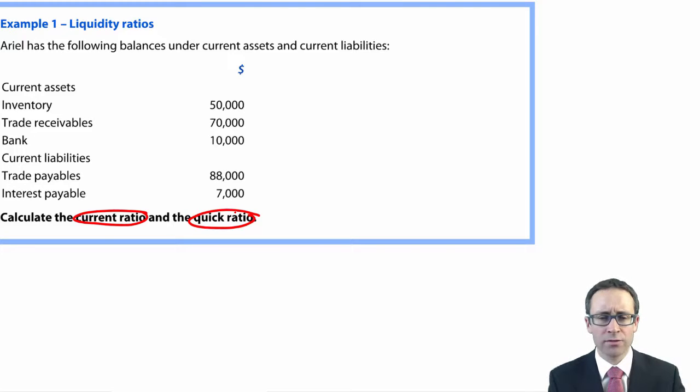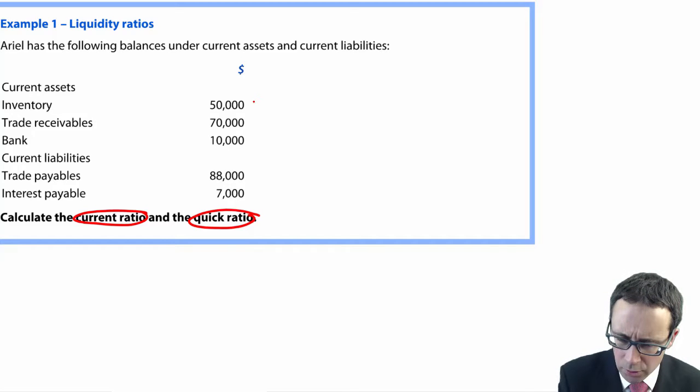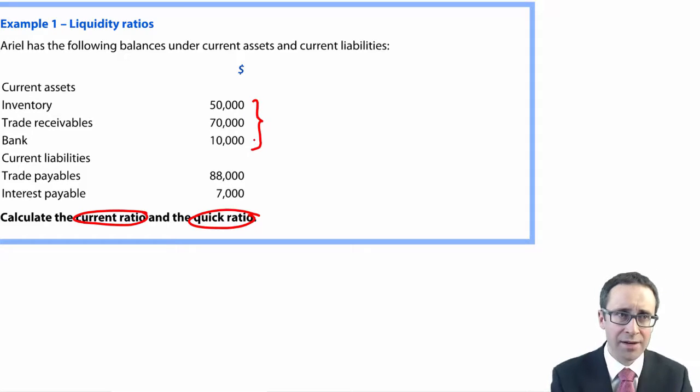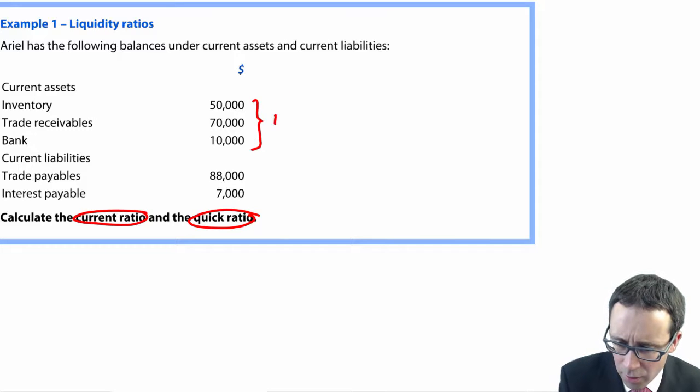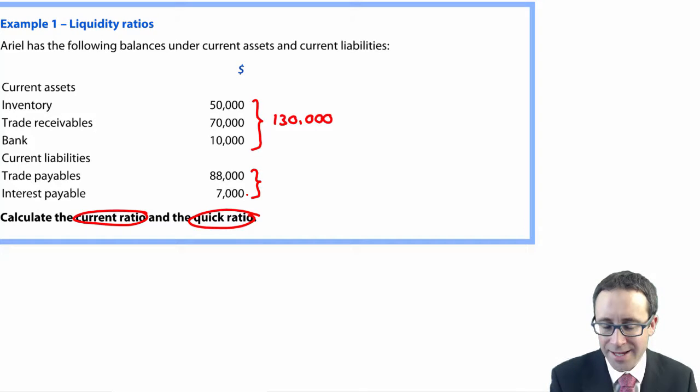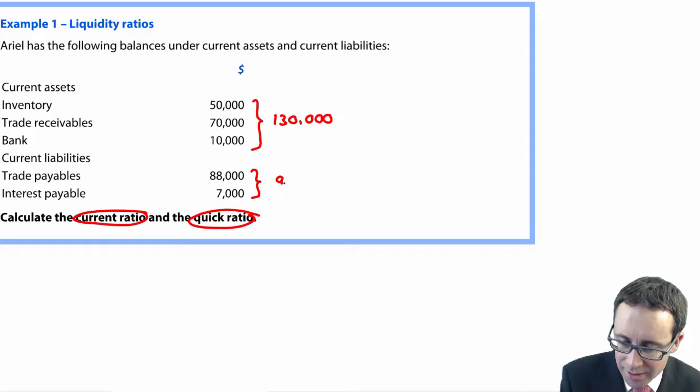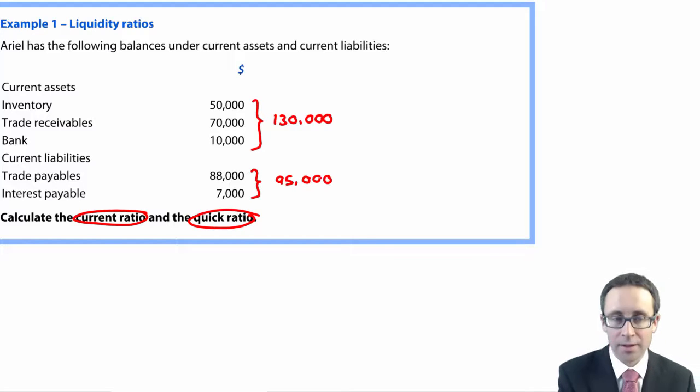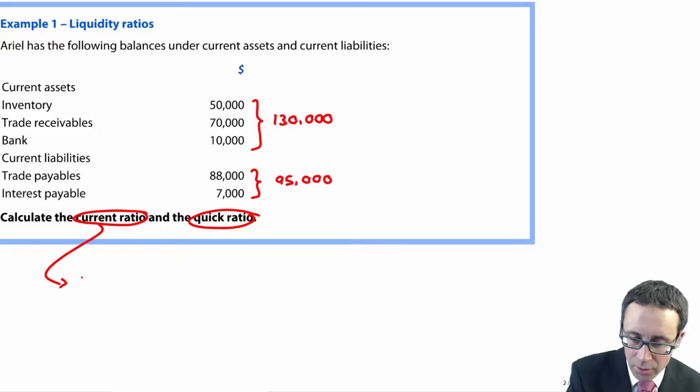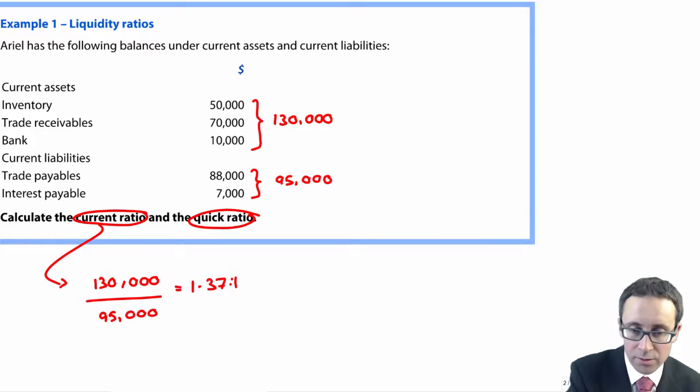You've got some extracts from Ariel's statement of financial position. You've got your assets at the top, your liabilities at the bottom. So your total current assets, if you add them up - 50, 70 and 10 - is that 130,000. And 88 and 7 is 95,000. When you're working out your current ratio,